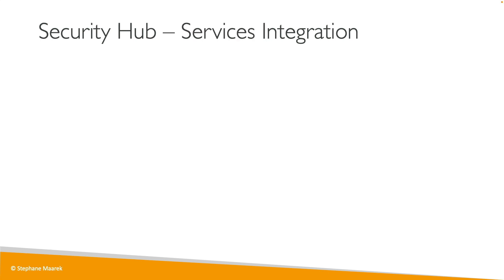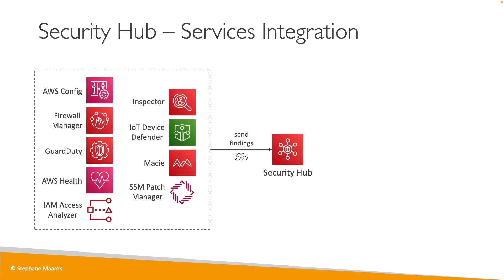Not just GuardDuty can send data into Security Hub — many services can. These include AWS Config, Firewall Manager, GuardDuty, Health, Access Analyzer for IAM, Inspector, IoT Device Defender, Macie, and SSM Patch Manager, and possibly others in the future. This is really why it's called the Security Hub — it aggregates security findings across all the different security services of AWS.